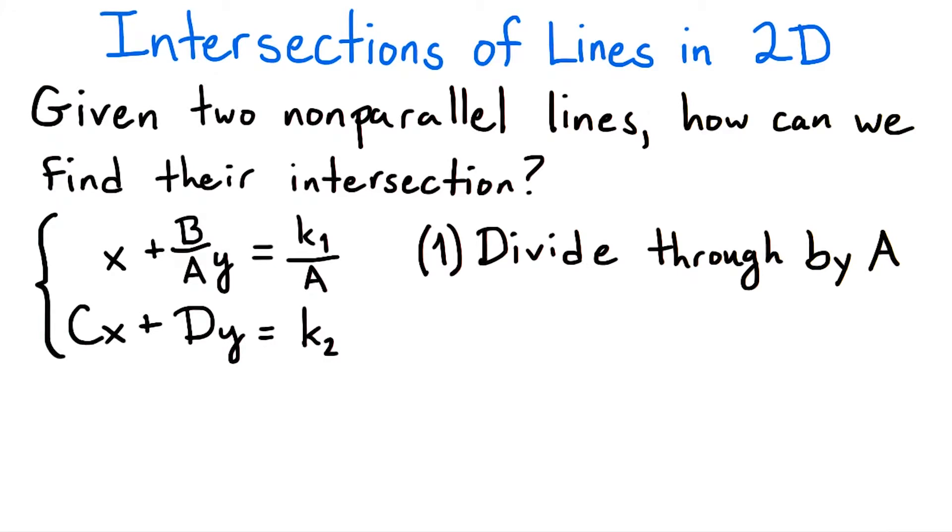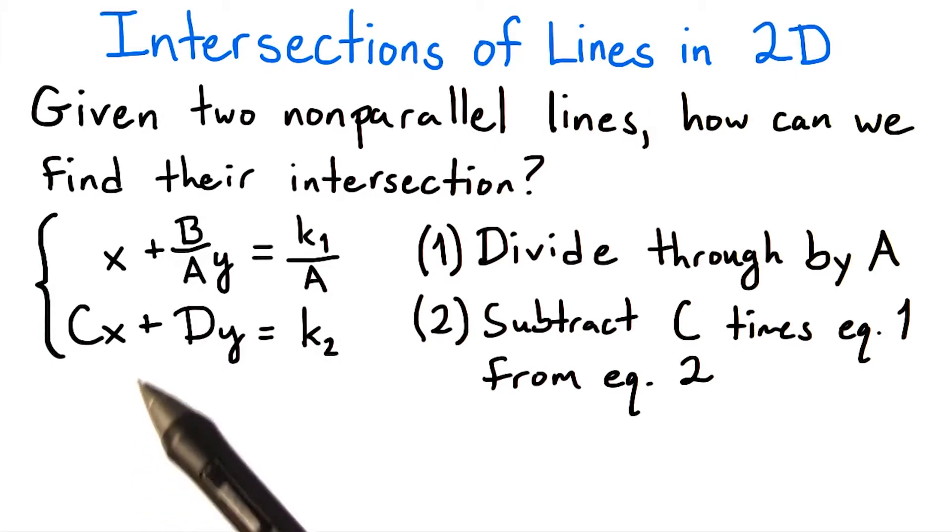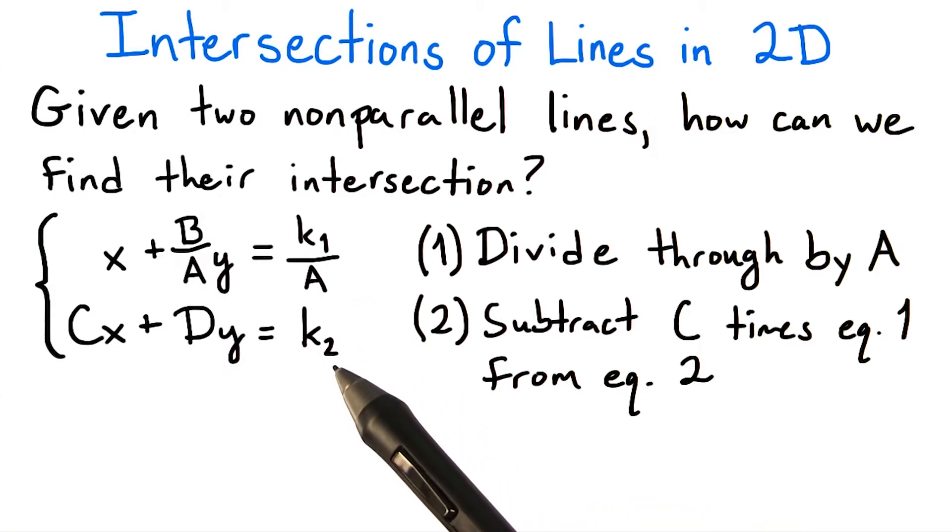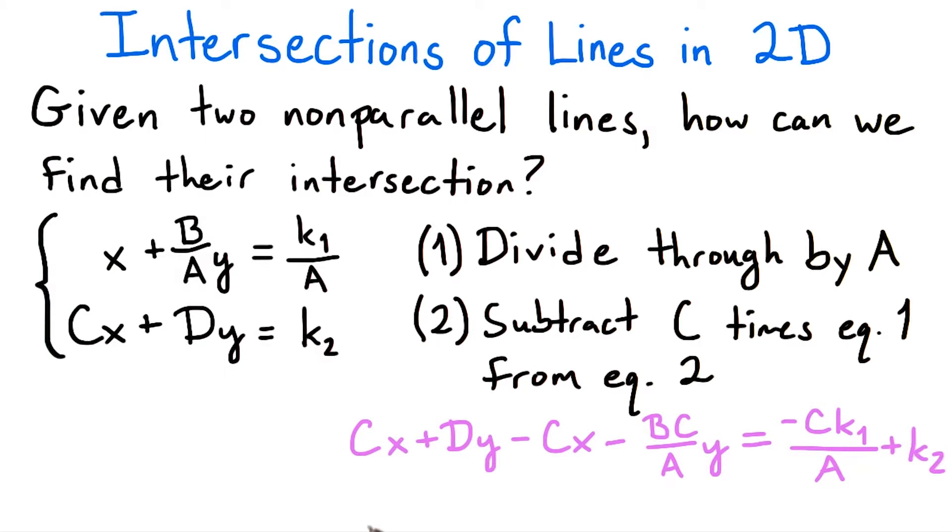Now, instead of solving for x directly, I'm going to do something slightly different. I will now subtract c times the left-hand side of this equation from the second equation. To maintain the balance of the second equation, I'll also subtract c times k1 over a from the right-hand side of the second equation. So now, our second equation looks like cx plus dy minus cx minus bc over a times y equals negative ck1 over a plus k2. The c terms cancel, and after collecting the y terms together, we get quantity d minus bc over a times y equals negative ck1 over a plus k2.